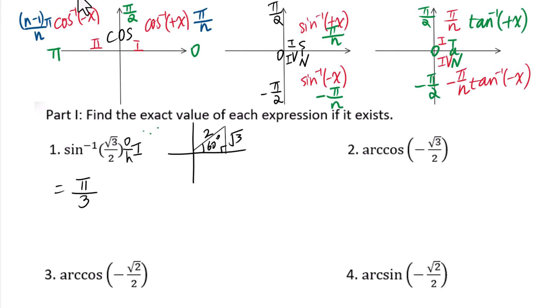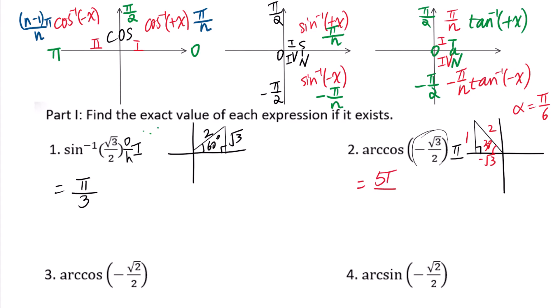Question 2: arc cosine of negative square root of 3 over 2. Since this is negative, the answer is in the second quadrant. Cosine is adjacent over hypotenuse — we get negative square root of 3 over 2, giving a reference angle of 30 degrees, which is pi over 6. Applying the second quadrant pattern (n minus 1) pi over n, the answer is 5 pi over 6.